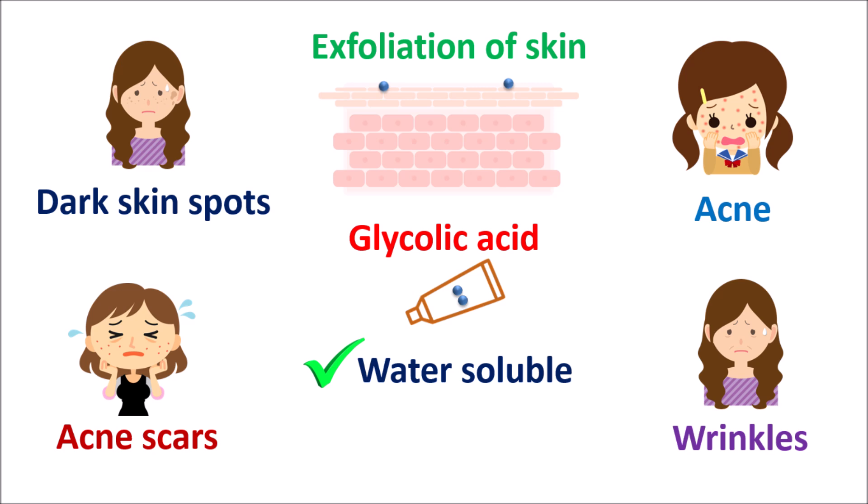Many acidic compounds cannot enter into the deeper layers of the skin due to water solubility. This limitation is not observed with glycolic acid. Glycolic acid is a small acidic compound with low molecular weight. Because of this low molecular weight and small size, glycolic acid can enter into the deeper layers of the skin where it can reduce the pigmentation, thereby reducing dark spots on the skin.